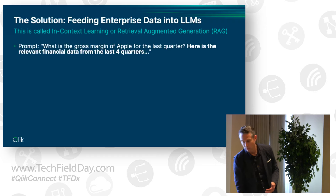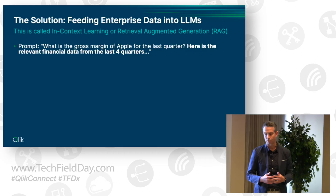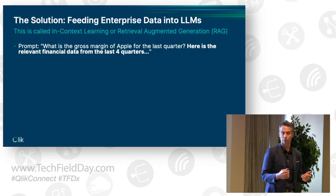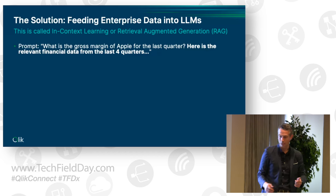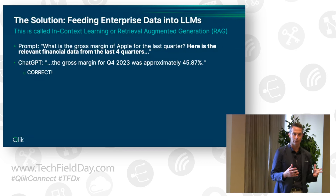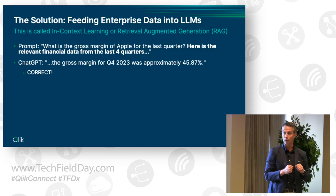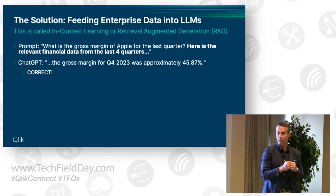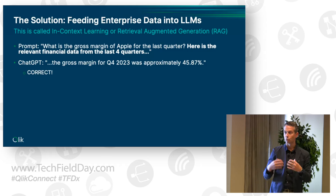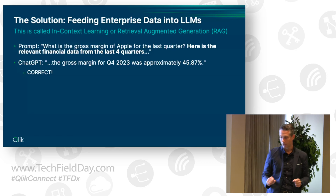Let's look at what this looks like manually. If you ask ChatGPT what is the gross margin of Apple for the last quarter, and you also provide the last four quarters of financials — say from Yahoo Finance — as part of your prompt, it turns out ChatGPT is able to get the question absolutely correct. You're breaking the problem into two steps: the retrieval step, where the system goes and gets up-to-date information, and then feeding that into a large language model with a prompt to answer the user's question. That's retrieval augmented generation.